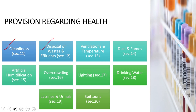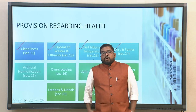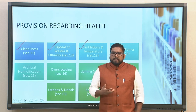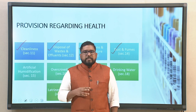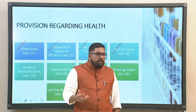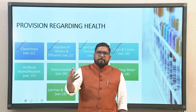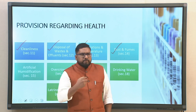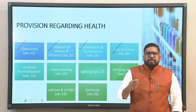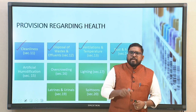Section 12 looks into the disposal of waste and effluents. Section 13 looks into ventilation and temperature — proper air circulation is a key aspect. Section 14 looks into dust and fumes — how well people working in factories are protected. For example, workers in thermal power plants related to coal and ash may face occupational hazards with ash content deposits. So whether you have electrostatic precipitators (ESP) or other equipment to curtail and reduce the amount of dust and fumes is critical and essential.